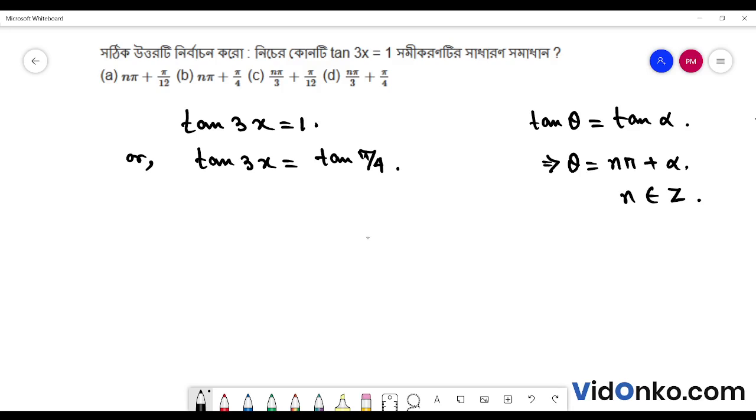n belong to set of integer. So, I will write 3x is equal to n pi plus pi by 4.